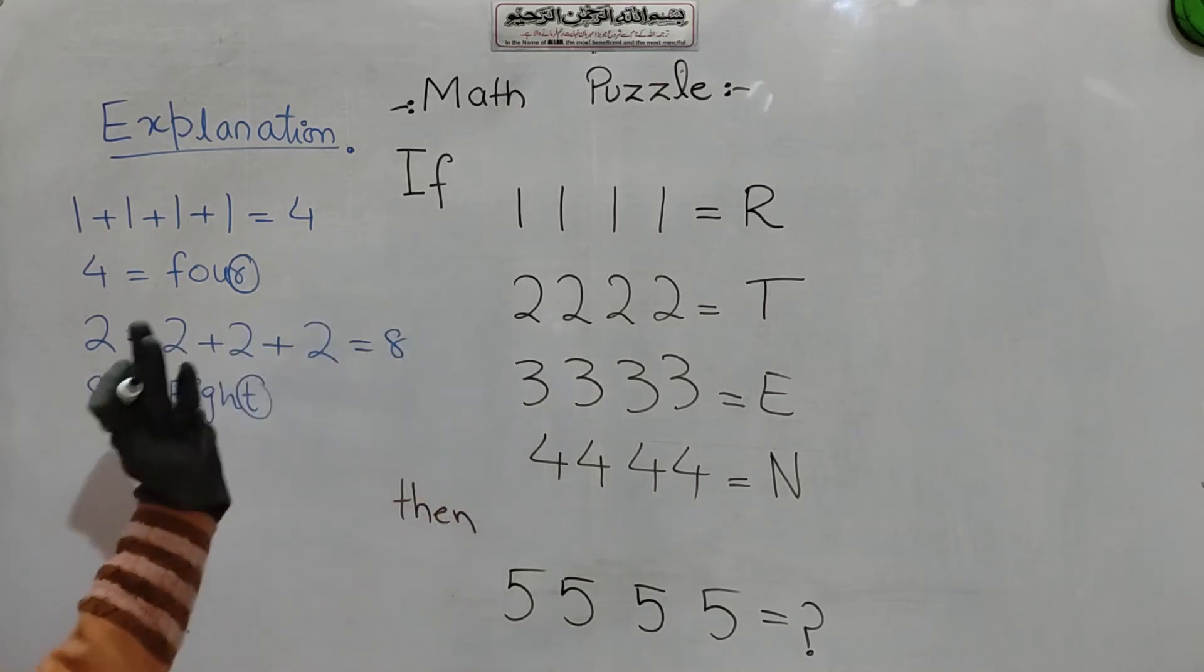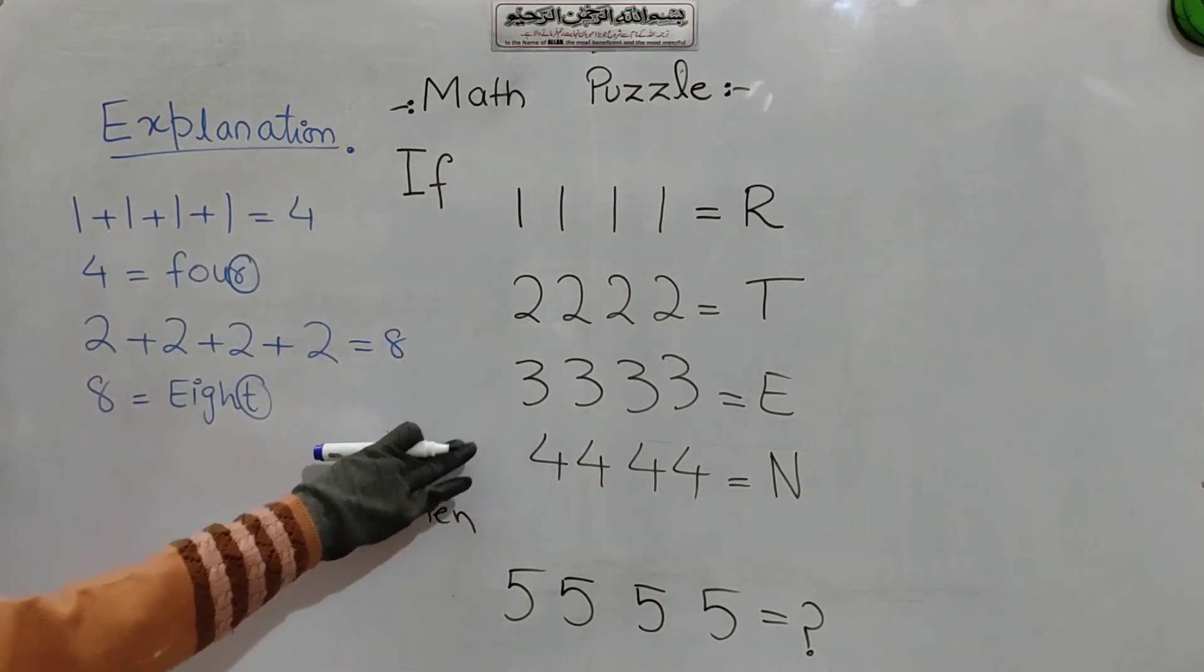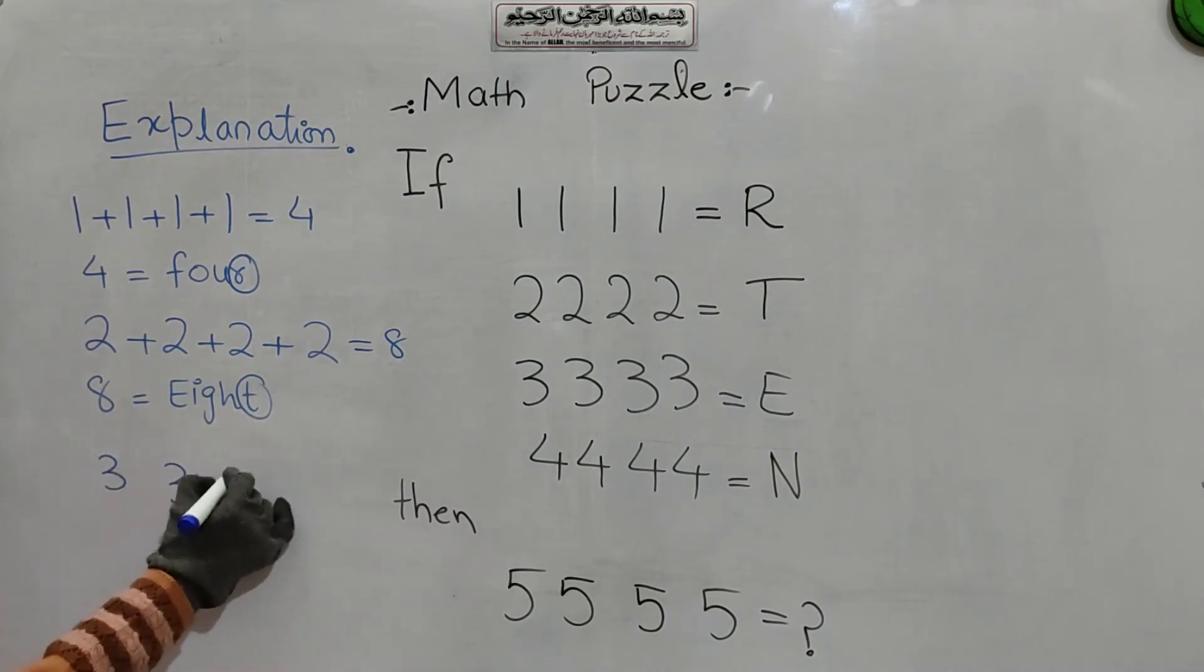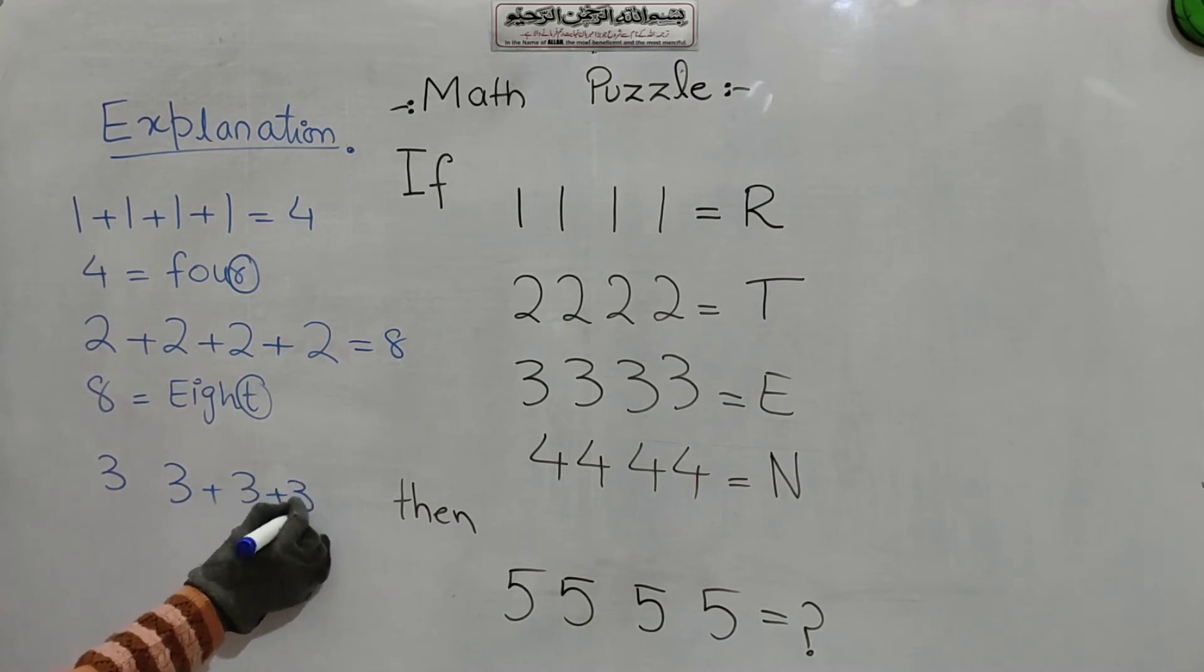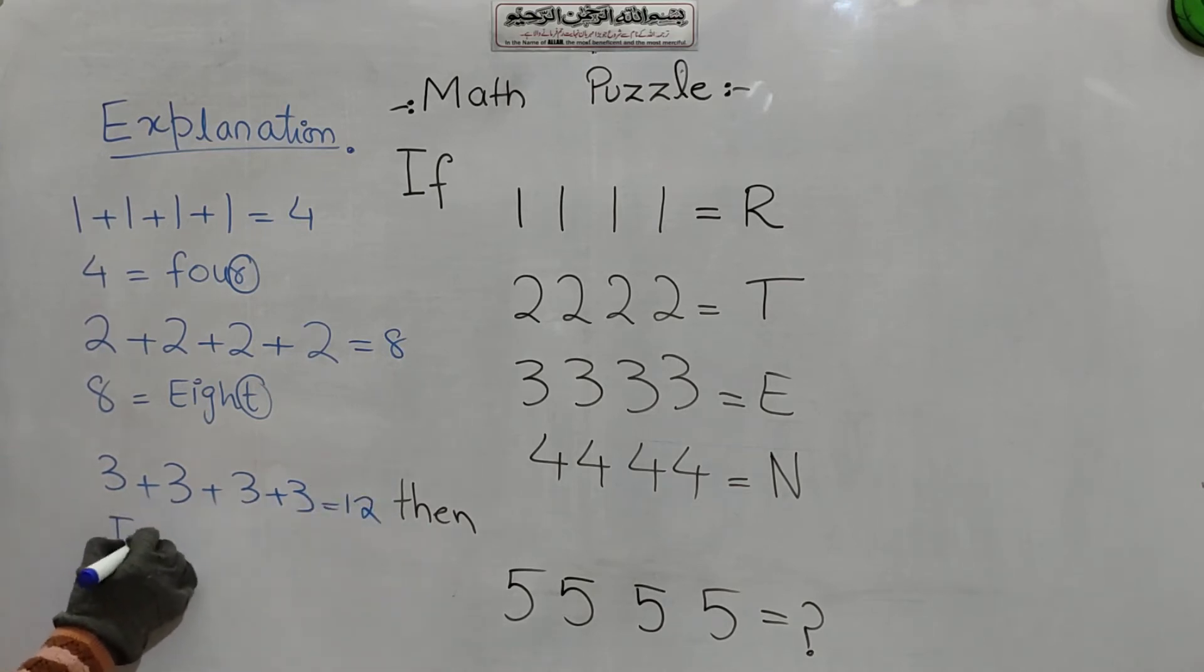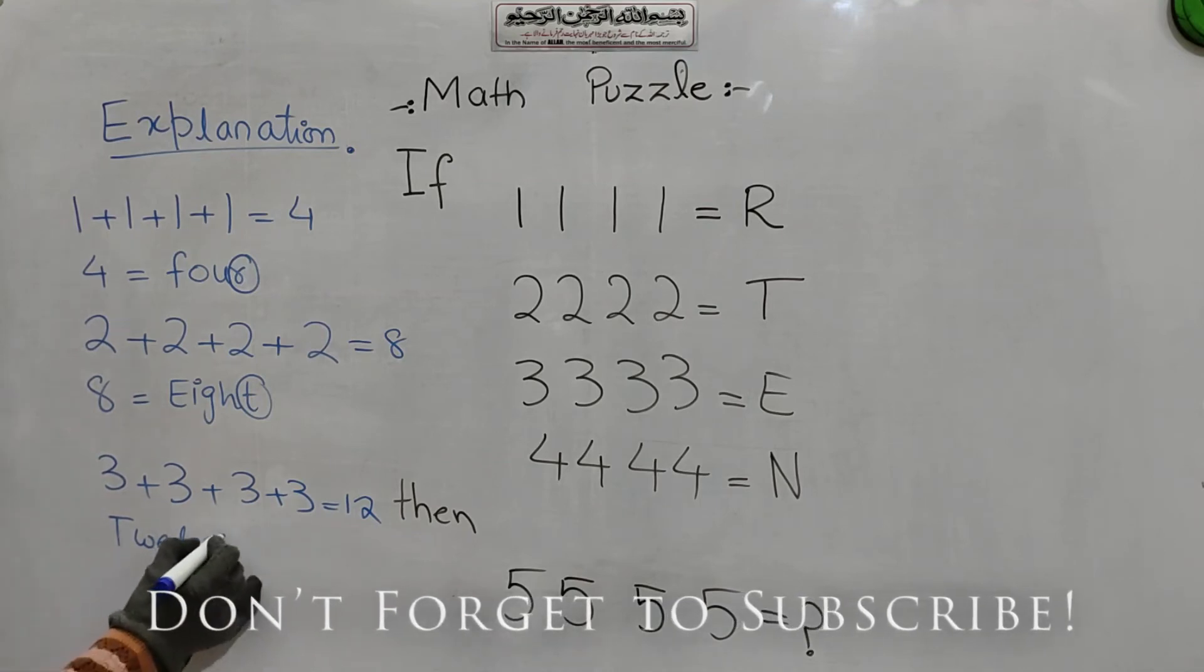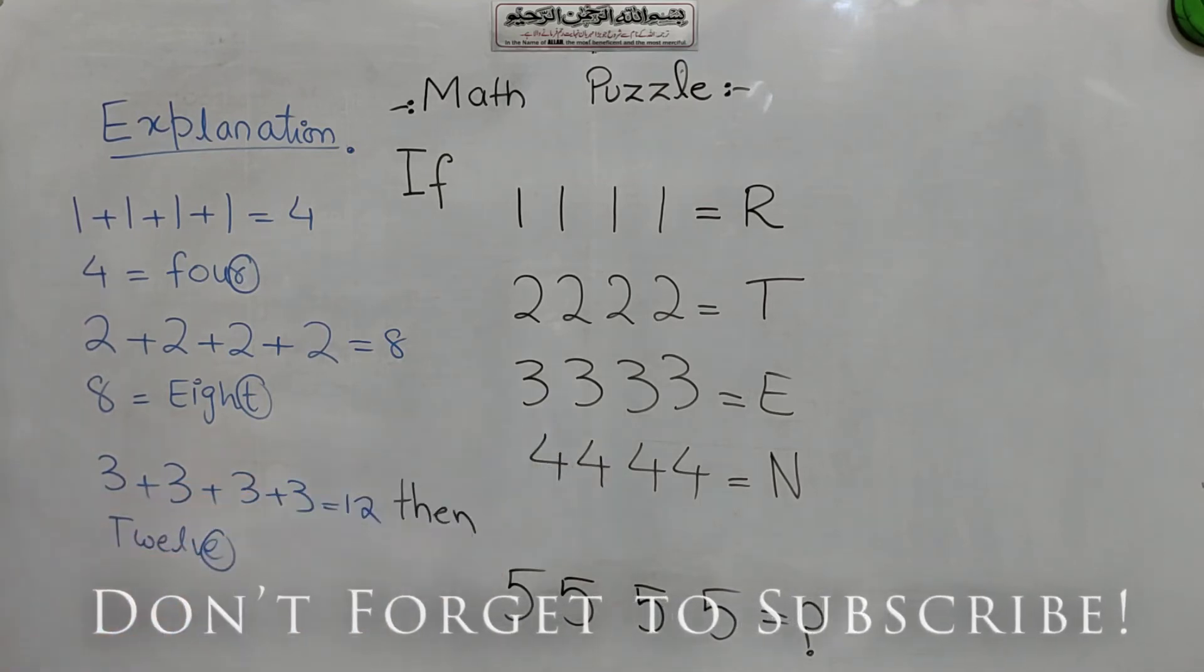We will apply this same logic in third row. 3, 3, 3, 3 and add these all numbers. We will get 12 and T, W, E, L, V, E. The last letter is E. So we write E here. So I hope students, you guys know right now the exact logic of this math puzzle.